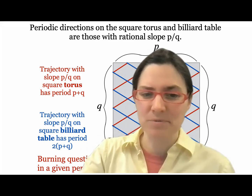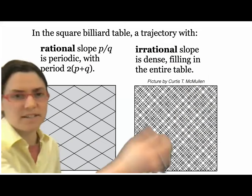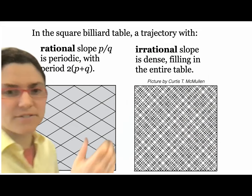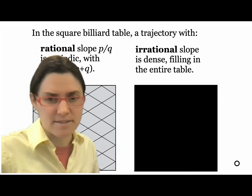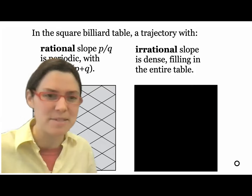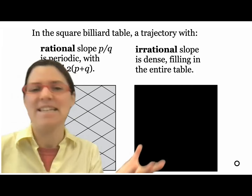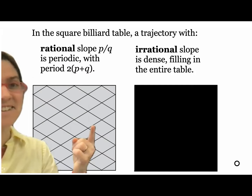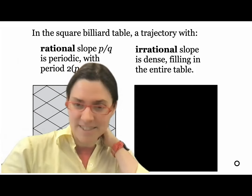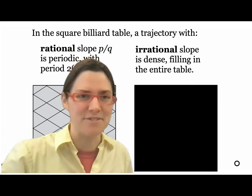In the square billiard table, if you hit a trajectory with a rational slope it's periodic with period 2(p+q). If you hit it with an irrational slope, it's dense and eventually fills the whole table. When I was starting out, people told me not to study periodic trajectories but rather aperiodic, ergodic behavior — that's where the interesting stuff is. But I preferred studying the beautiful periodic pictures. It's a niche, and in this case it turned out to be interesting.